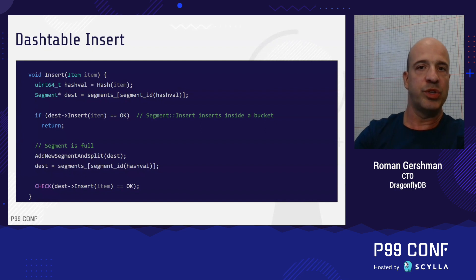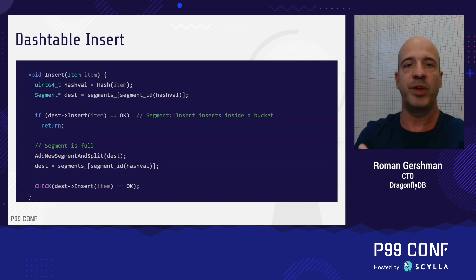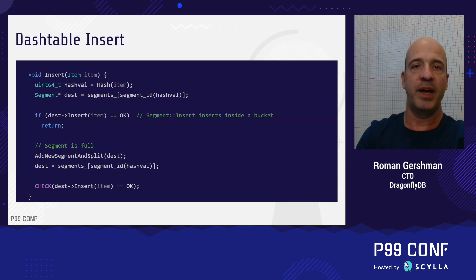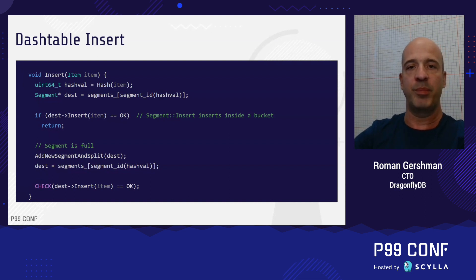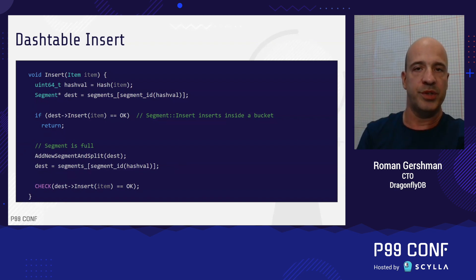I want to stress this point. Usually, when a hash table grows, most of its records need to move. But in this case, most of the records stay in the same place, even when we add a new segment. Since our segments have capacity for a thousand records, the segment addition will happen on average once in a thousand insertions and will take constant time.